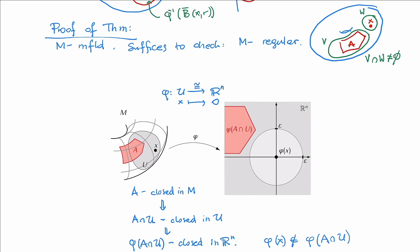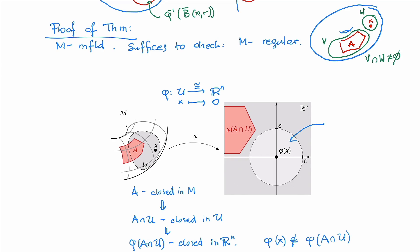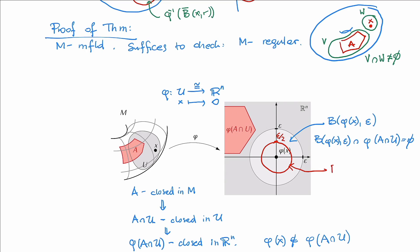Since Rn is a regular space — because it is a metric space — we can find an open ball of some possibly very small radius epsilon centered at phi(X), such that this open ball does not intersect the closed set phi(A ∩ U). Now let's take an even smaller ball with the same center phi(X) but with radius epsilon over 2.